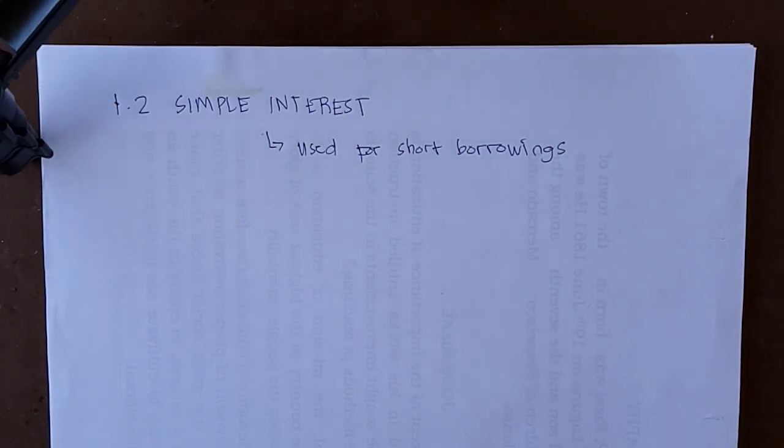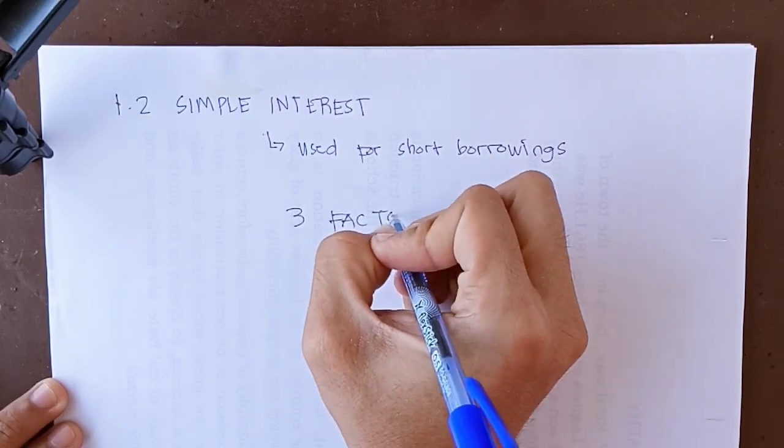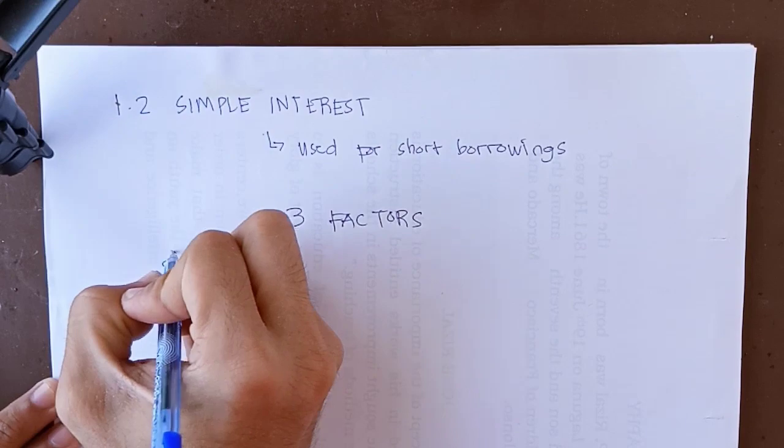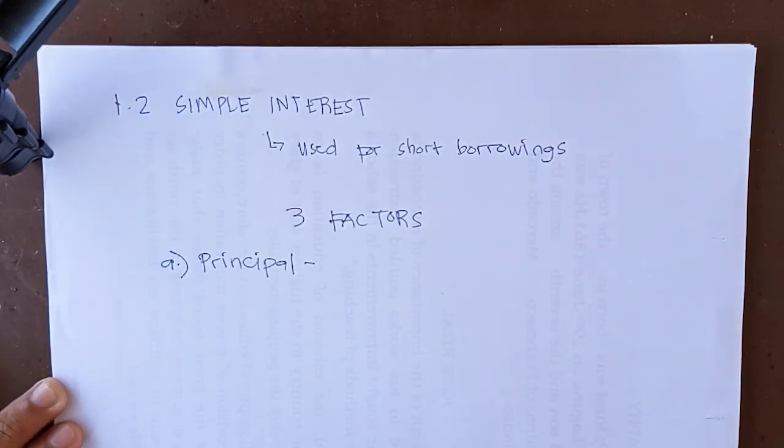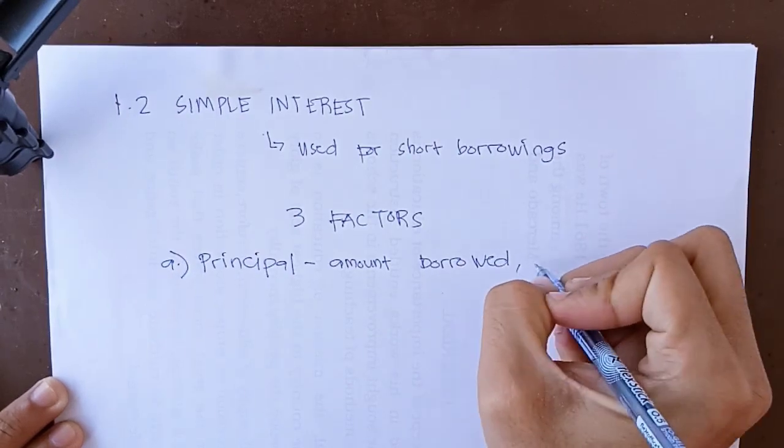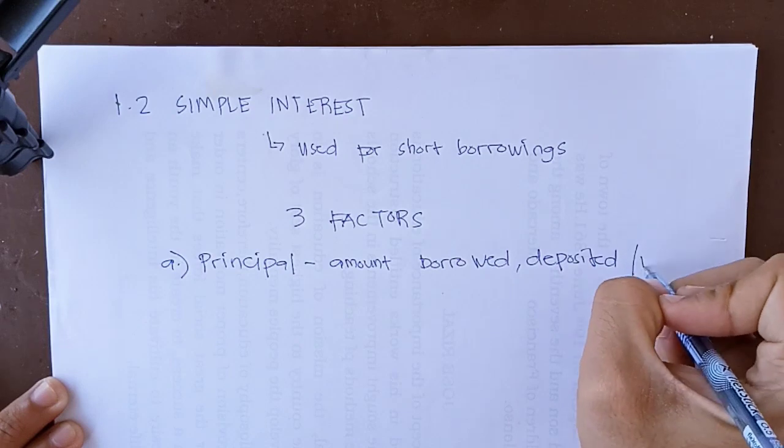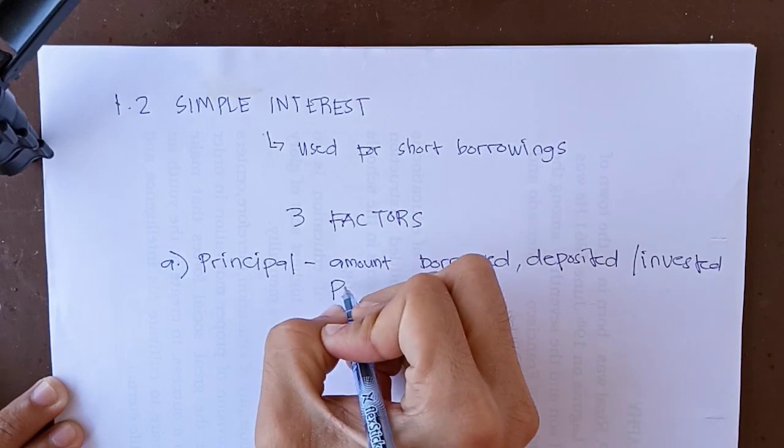For simple interest, it's determined using three factors. First, we have the so-called principal. When we say principal, it refers to the amount borrowed, deposited, or invested. Again, the amount borrowed, deposited, or invested. We denote the principal with the capital letter P.